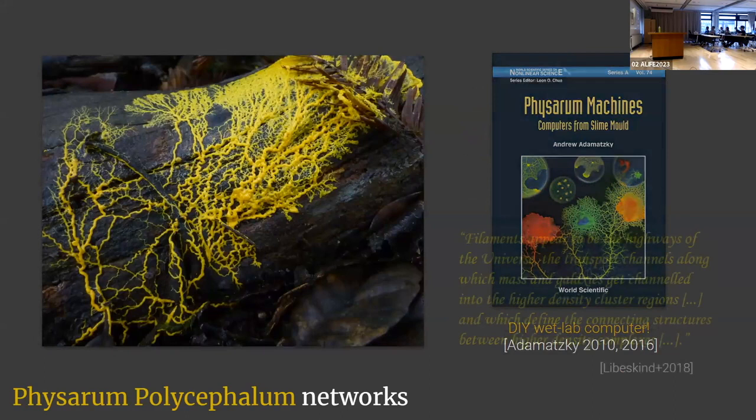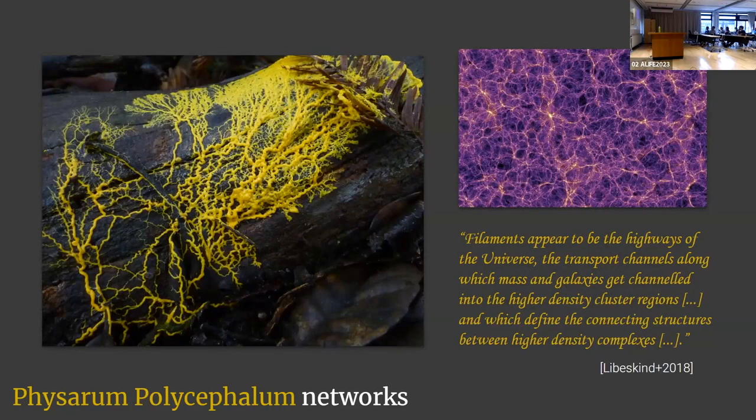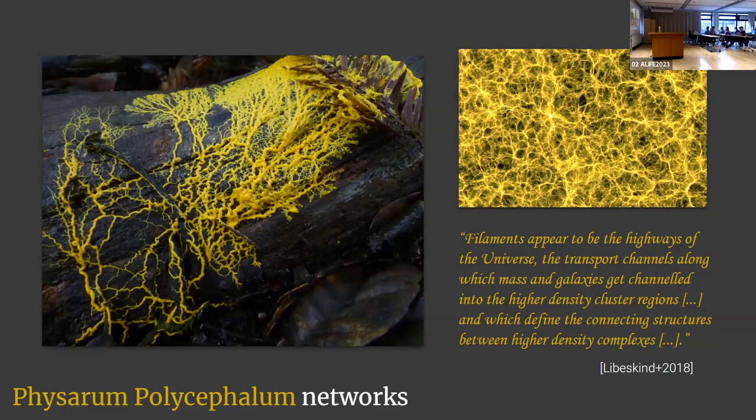For us, this cosmology paper is key. Cosmologists basically see the cosmic web as a transportation network for gas, plasma, and all the stuff in between galaxies. And when you squint a little and maybe color it yellow, you can start seeing some similarity between the two. It's not one-to-one, but close enough that we can start using slime mold as a model organism to maybe solve this problem.